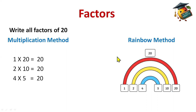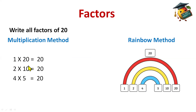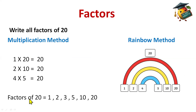In the rainbow method, you make rainbows. First you write the multiplicands on one side, then the multipliers on the other side — like 1 × 20 = 20, 2 × 10 = 20, 4 × 5 = 20. This way we got the factors. So in the multiplication method, the factors are 1, 2, 4, 5, 10, and 20. Factors of 20 are 1, 2, 4, 5, 10, and 20.